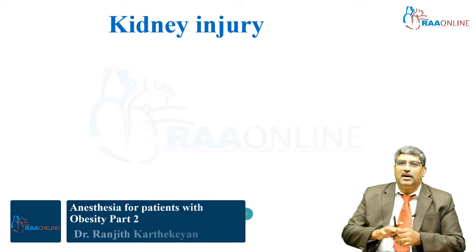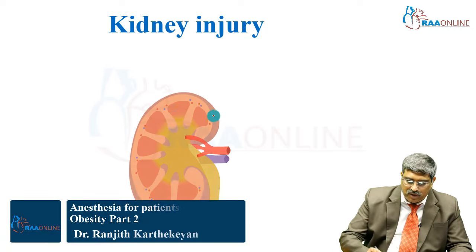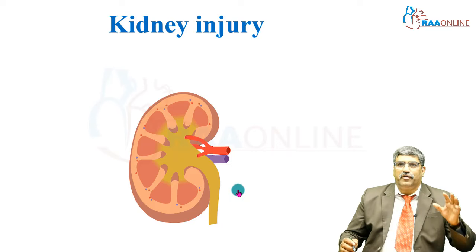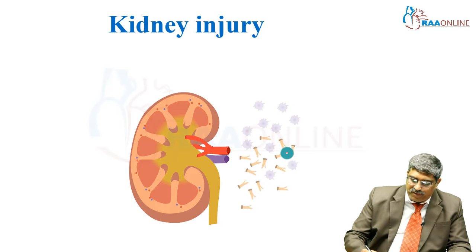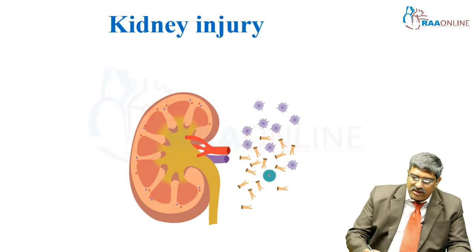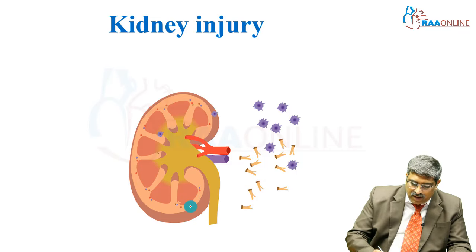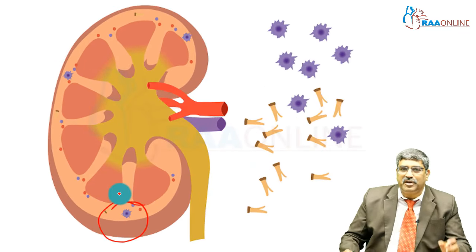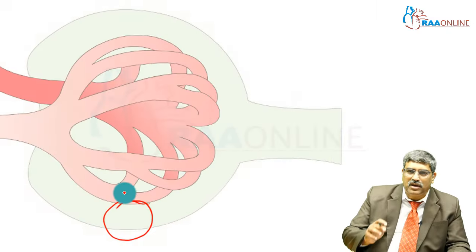Coming to the renal system, here you have the kidney. If you look at the functional unit — the nephron — fat cells go and deposit into those nephrons, and macrophage M1 and fat cells also deposit there.